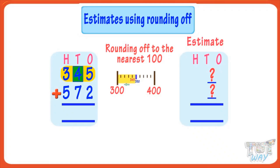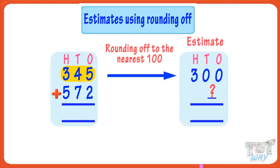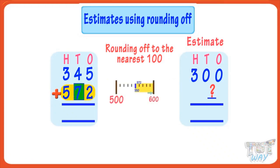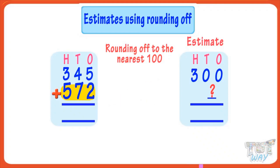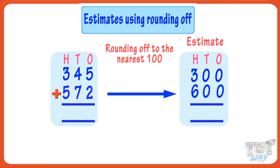In 345, the tens digit is 4, which is less than five, so we round it down to the previous hundred — that is 300. In 572, the tens digit is 7, which is more than five, so this number is rounded up to the next hundred — that is 600. Now our rounded off figures are 300 and 600. Adding them is quite easy: 300 plus 600 gives 900. So our estimate for adding 345 and 572 is 900.